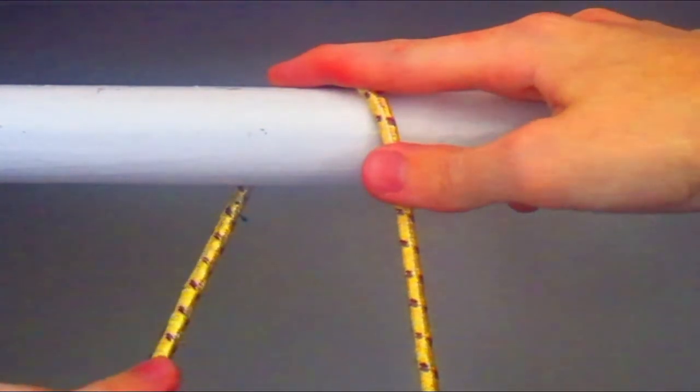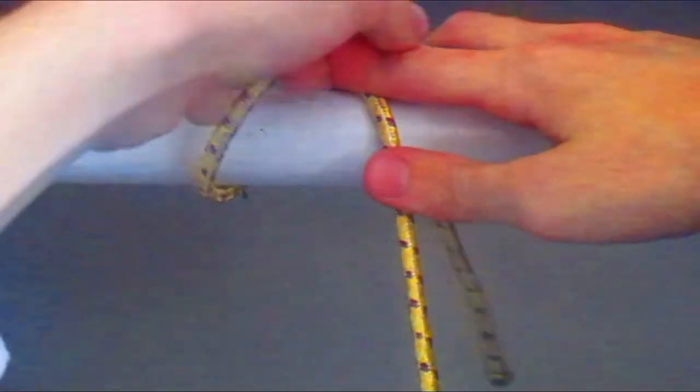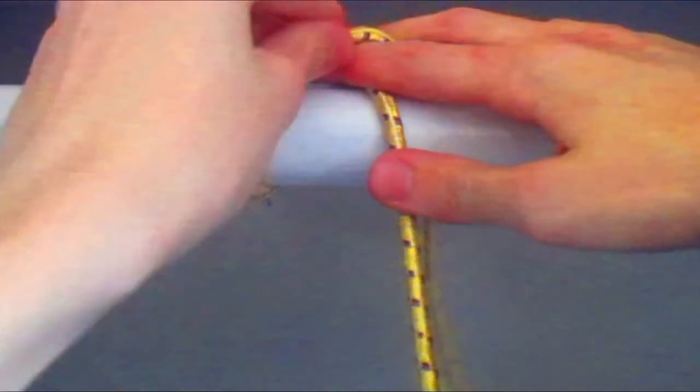Next, take the working end, turn it round about the pole, crossing the first wrap and your index finger.